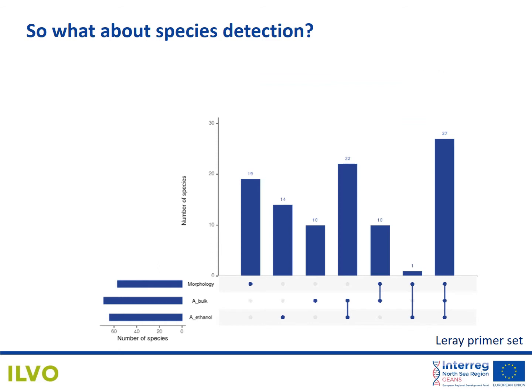Primer set A, the Liray primer set, detected the highest number of morphological species in our metabarcode dataset. But how do these species differentiate between morphology, bulk DNA, and eDNA from the ethanol preservative? We see, for example, that 27 species are picked up in all three datasets. We also see that 49 species have been detected in both the bulk DNA and the eDNA from the ethanol preservative. This is a high number and quite in contrast with a previous study that tested this for insects from freshwater systems, where they found almost no shared species between the two sources of DNA.